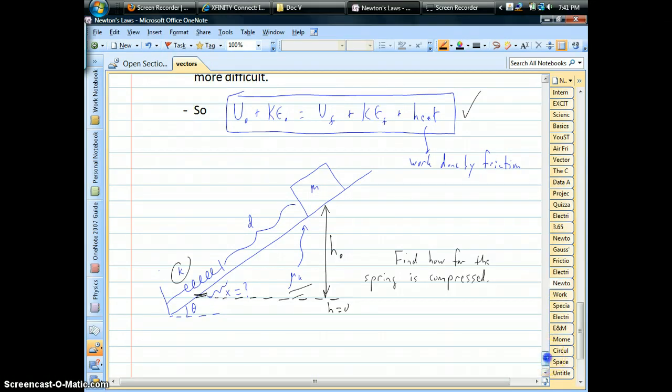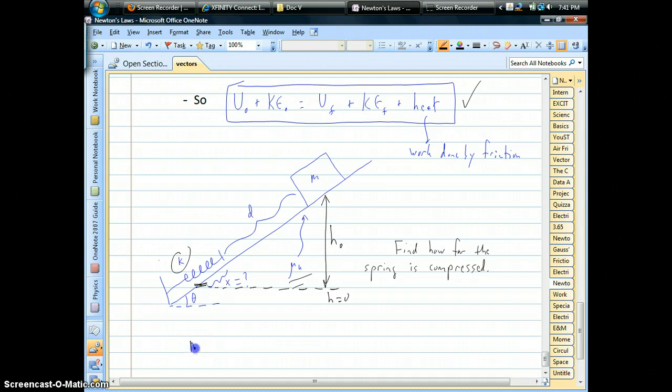So looking at our energy equation, the initial potential energy is just mgh initial. We'll assume that if it starts at rest, there is no initial kinetic energy. So by the time it slides down and compresses the spring all the way and stops, we ask the question, well where does all that energy go? Well in the end, there's no mgh, because we're at height equals zero, however there is spring energy. The spring gets compressed. So we have to plug in our one-half kx squared in our final snapshot. It stopped, so there's no kinetic energy, but there's also heat.